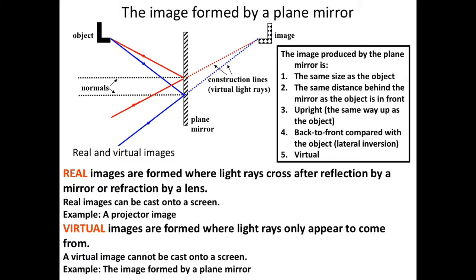To clarify: real images are formed where actual light rays cross, so they can be projected onto a screen — a projector image is an example. Virtual images are formed where light rays only appear to come from; they're not real. It's where we see light rays coming from when they reflect off a mirror or pass through a lens, but it's not actually where the image is. Images formed by a plane mirror are examples of virtual images.